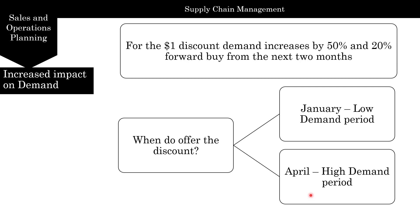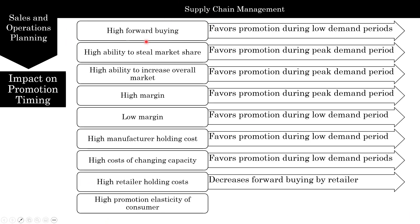It's important to go back to the timing framework we discussed: high forward buying, high ability to steal market share, ability to increase the overall market, high margin, low margin, high manufacturer holding costs, high cost of changing capacity, high retailer holding costs. We can look at multiple examples and see how each factor affects profitability. With this, we've finished sales and operations planning and are done with this module. We'll see you next time.